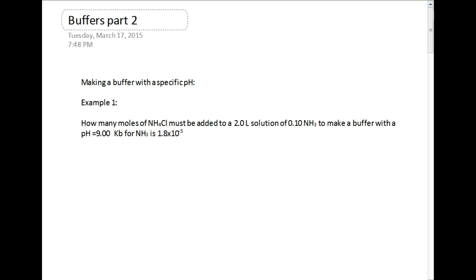Let's look at example one. How many moles of ammonium chloride must be added to two liters of 0.1 molar NH3 to make a buffer with pH equals 9? They give us the Kb for NH3 as 1.8 times 10 to the negative fifth. This is going to be a weak base conjugate acid type buffer.